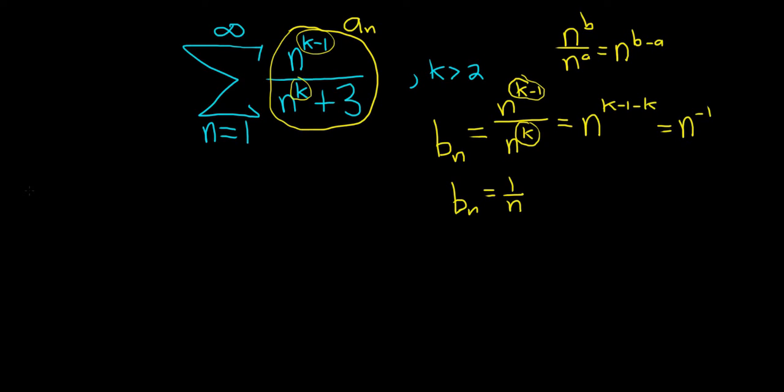So what the limit comparison test says is if you take the limit as n goes to infinity of a sub n over b sub n, and you get a number which is finite and positive. In other words, you get a positive number, then that verifies that these have the same growth rate. And so therefore, the sum of the a's will behave the same as the sum of the b's. So if the sum of the a's converges, so does the sum of the b's and vice versa.